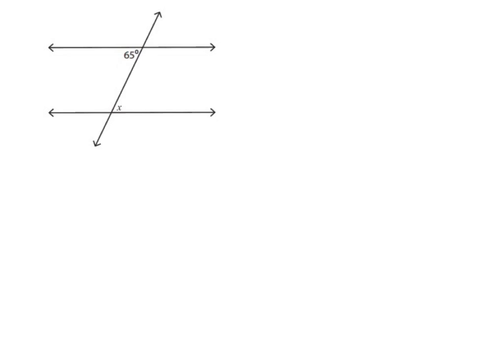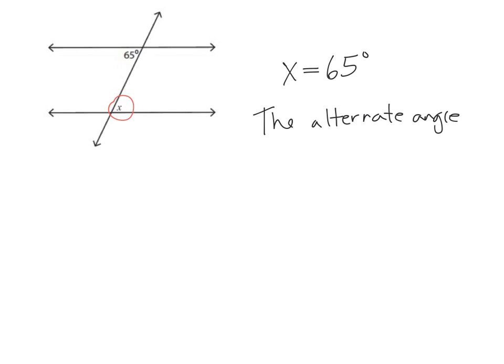Next question — this one's a lot easier to justify. Looking at this, I can observe there are two parallel lines and a transversal. I can see that one of the angles is 65. I also notice that x is an alternate angle to 65. So simply, all I have to write is x equals 65 degrees. And as an explanation, I would say the alternate angle of x equals 65 degrees. And that's it — I would be done justifying my response.